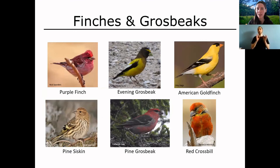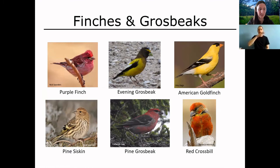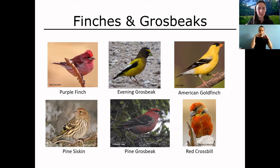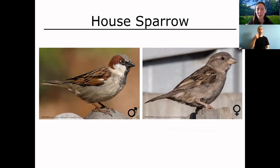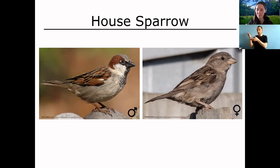Finches and grosbeaks are another family happy to come to bird feeders, especially in the winter. Males and females again look different from each other, but they're often found in cities and towns so you may have more opportunity to observe them. They are seed-eating birds with strong conical triangular-shaped bills — a key feature. They're also more likely to be found near the tops of trees rather than hopping around on the ground. The House Sparrow is really common in towns — you'll see them nesting in any crack they can find in houses, incessantly cheeping. They're actually a European species and not closely related to our sparrows, so they're typically found at the end of your field guide.